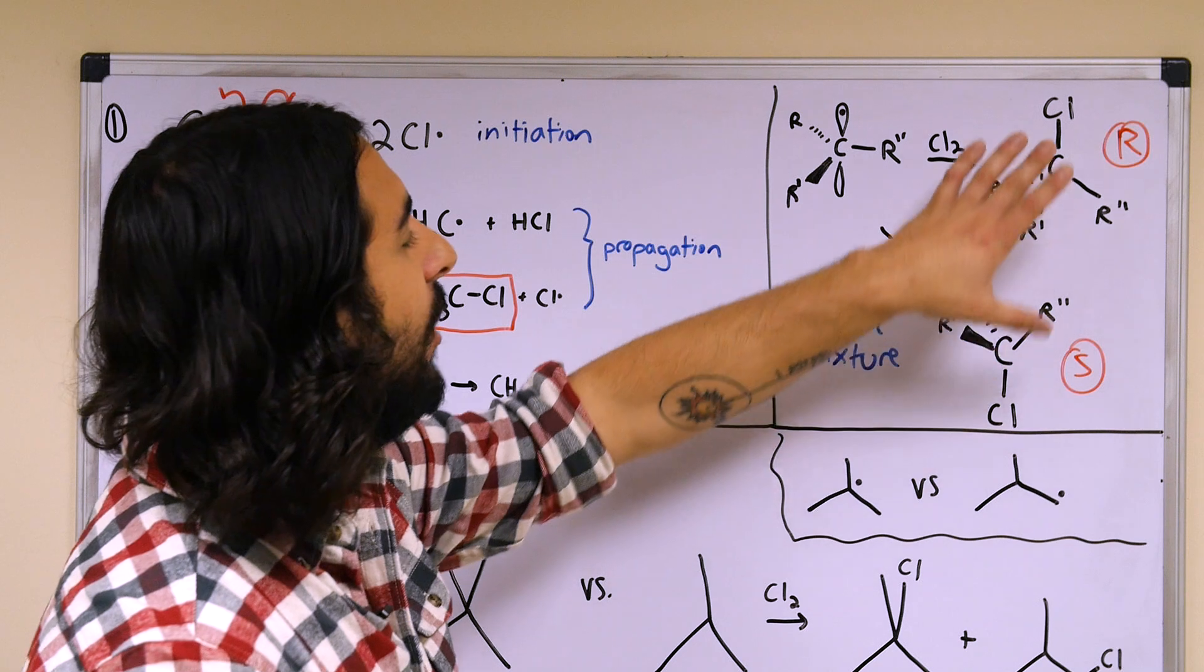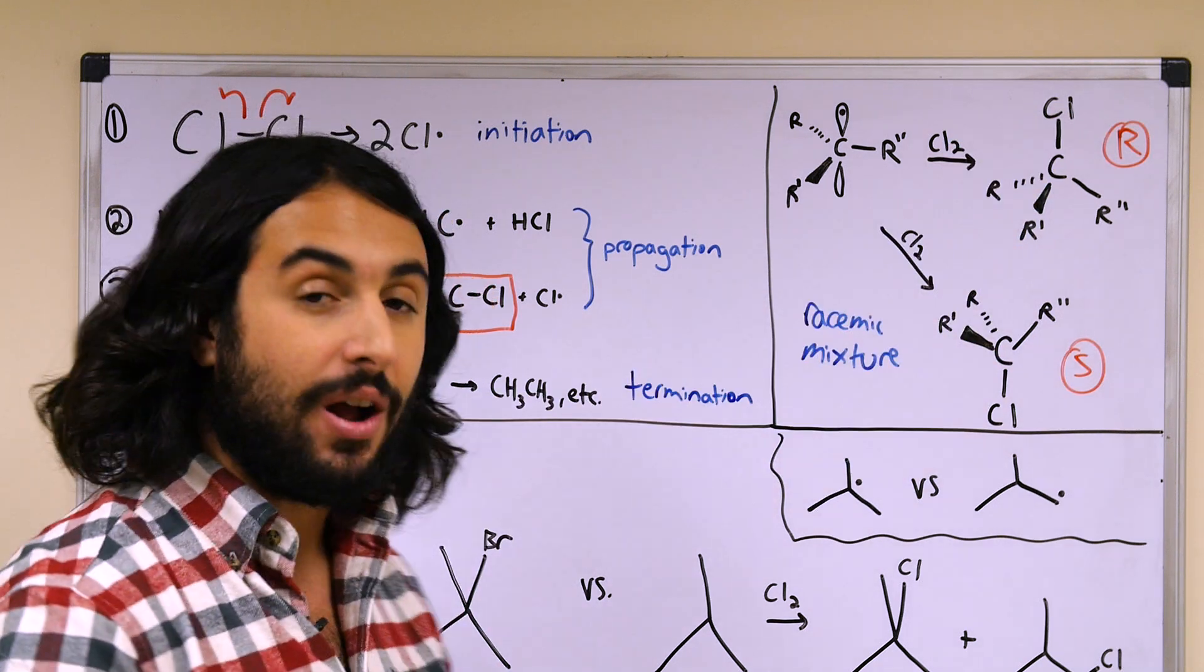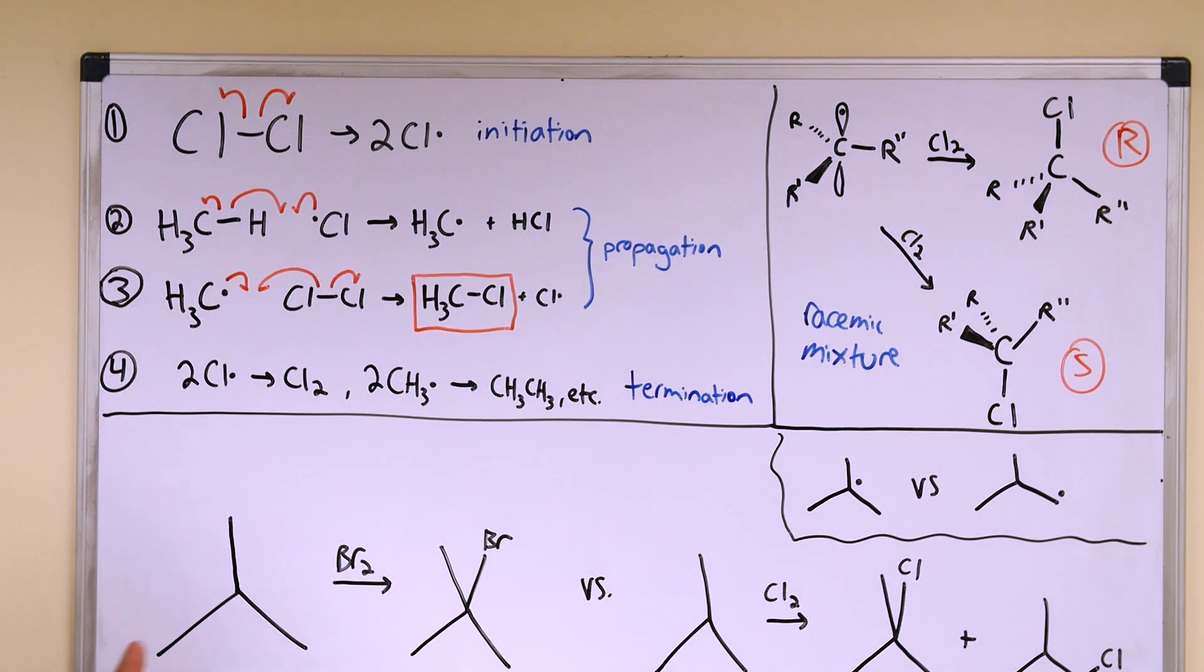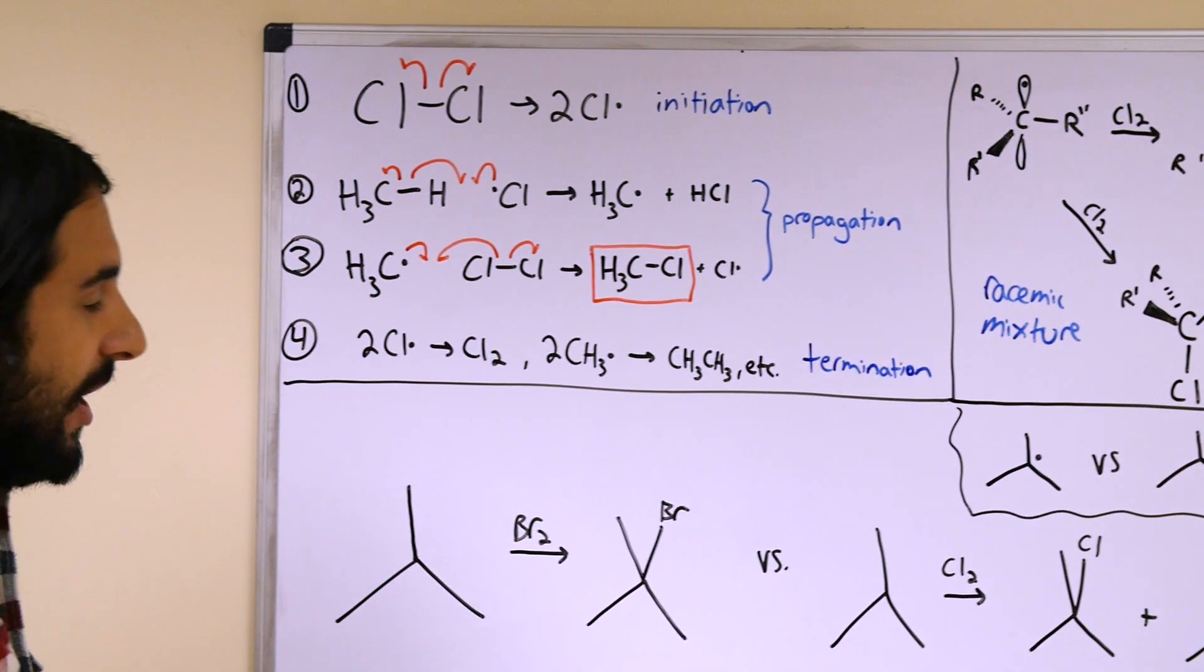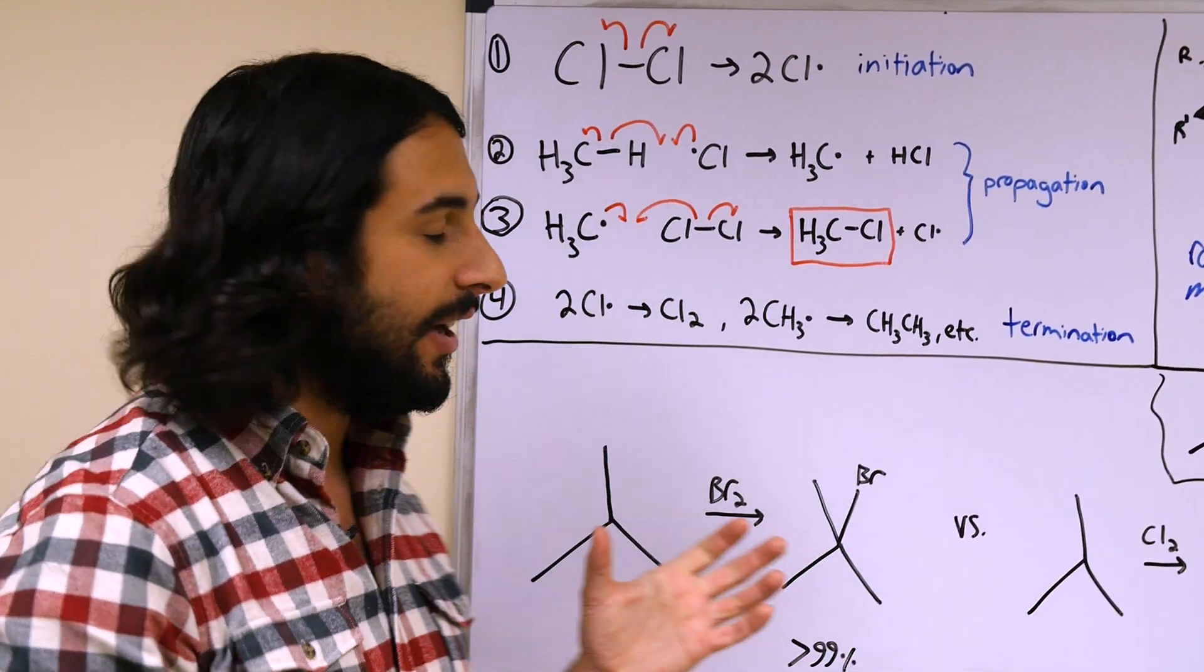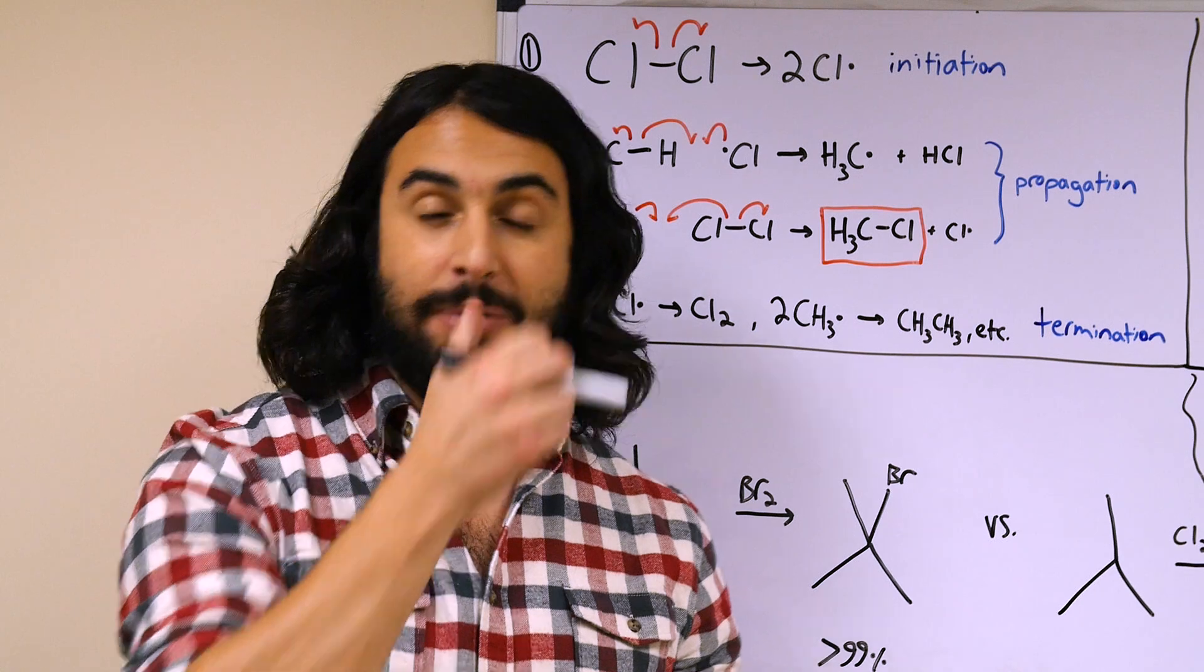That describes the halogenation. Now the other thing that we have to understand about halogenation is that a free radical halogenation can potentially be a very regioselective process.